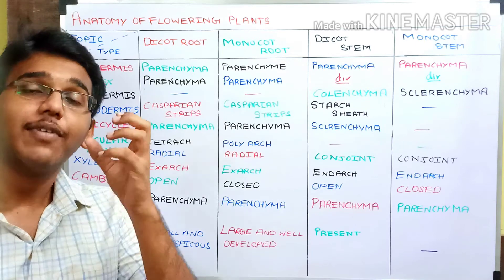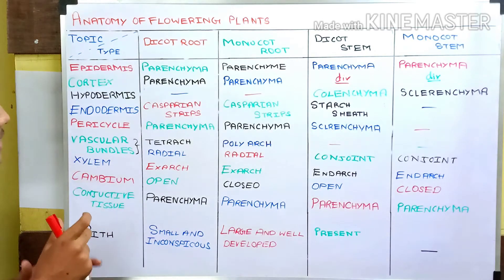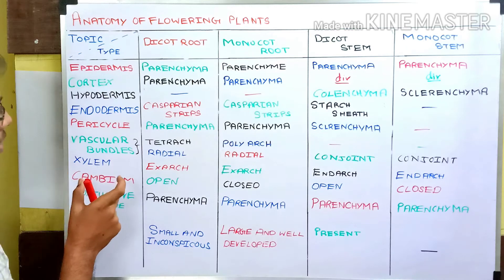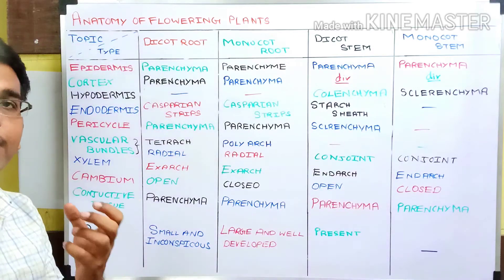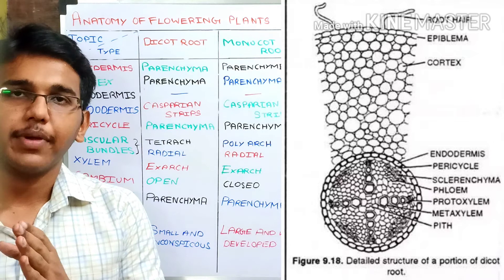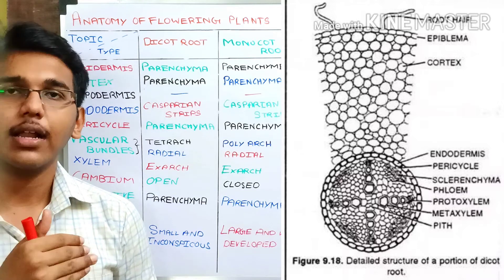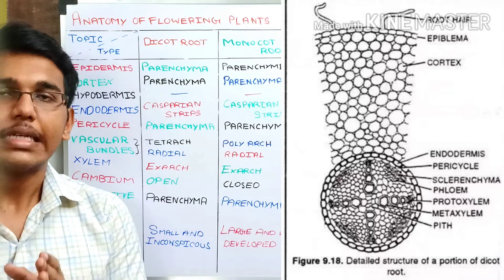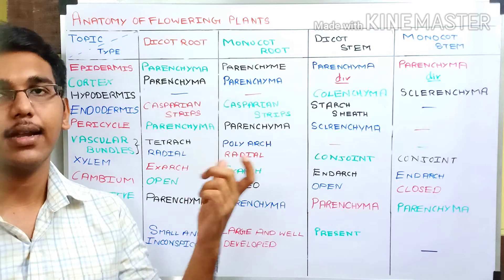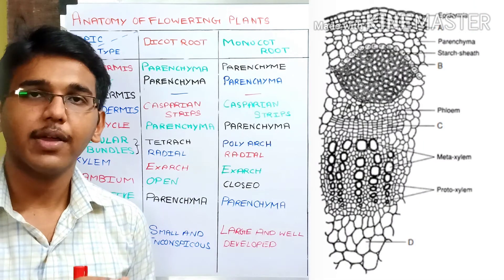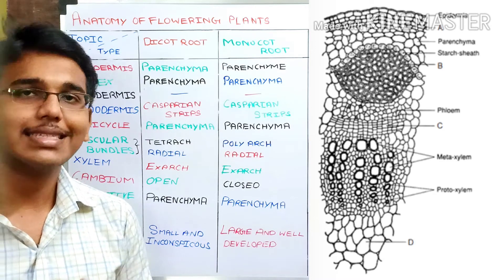Inside the vascular bundle we have xylem and cambium. Xylem in roots is exarch — protoxylem is towards the periphery and metaxylem is towards the center, so growth is centripetal. In stems, xylem is endarch — protoxylem is at the center and metaxylem is at the periphery, so development is centrifugal, away from the center.